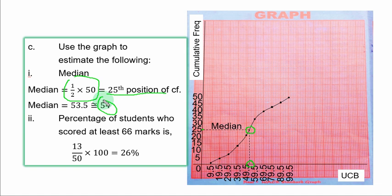So you have 13 over total frequency, 50 times 100.